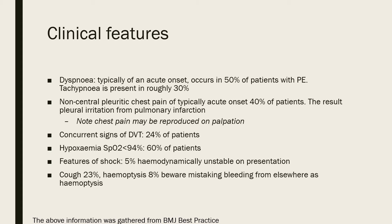The typical clinical features people think about are dyspnea and chest pain. Dyspnea is typically of acute onset and occurs in 50% of patients with PE, and tachypnea is present in roughly 30%. The chest pain is typically non-central, pleuritic, of acute onset, and occurs in 40% of patients, resulting from pleural irritation from pulmonary infarction. Importantly, the chest pain can be reproduced on palpation, so you can't use pain reproduced on palpation to rule out PE.